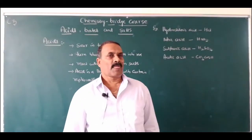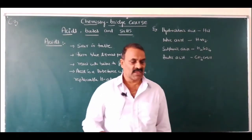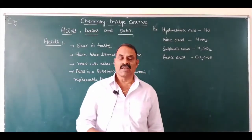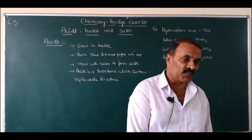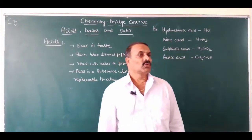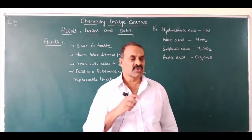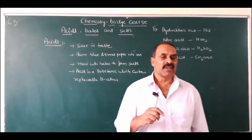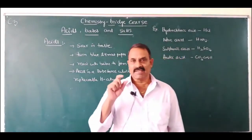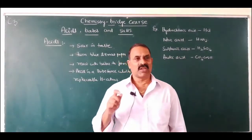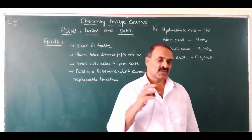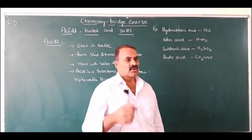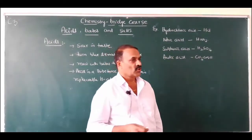For example, tamarind is sour in taste. Citrus fruits namely lemons, oranges, etc. contain citric acid, therefore they are sour. Vinegar contains acetic acid and it is also sour in taste. So all these are acids.